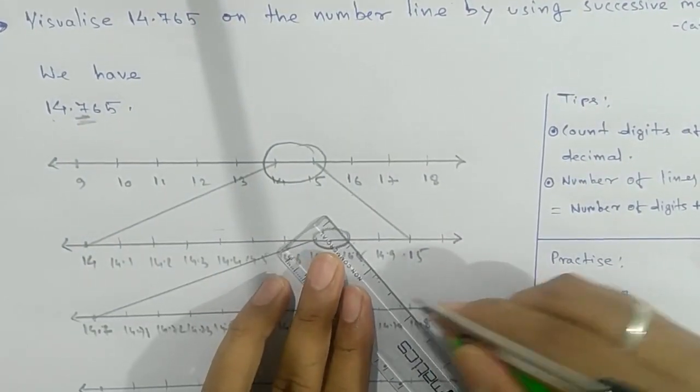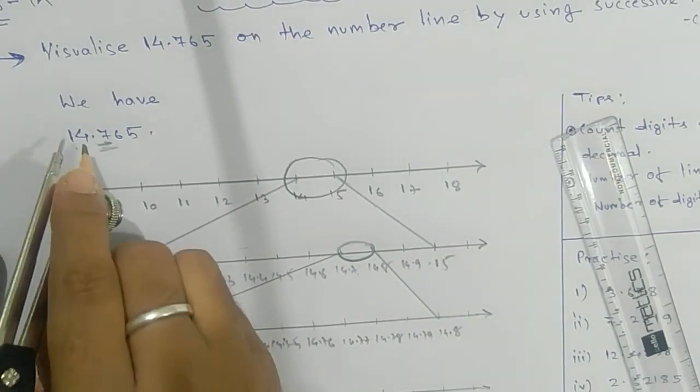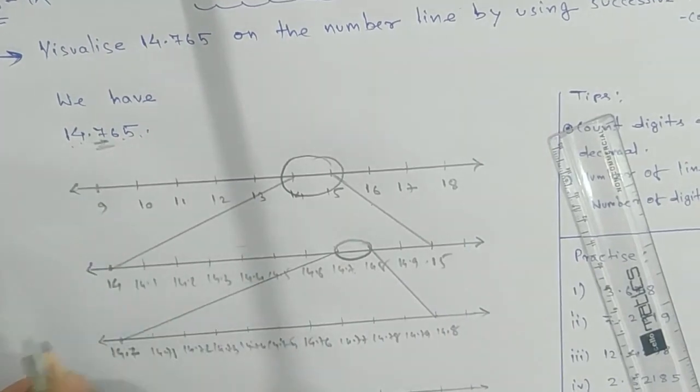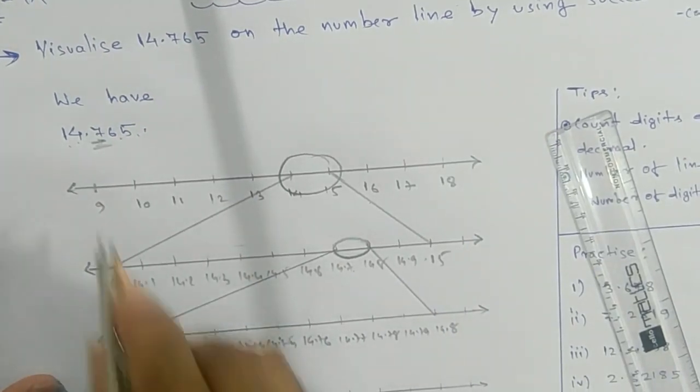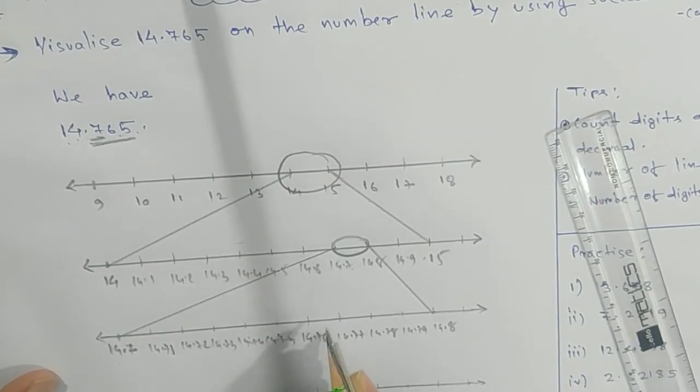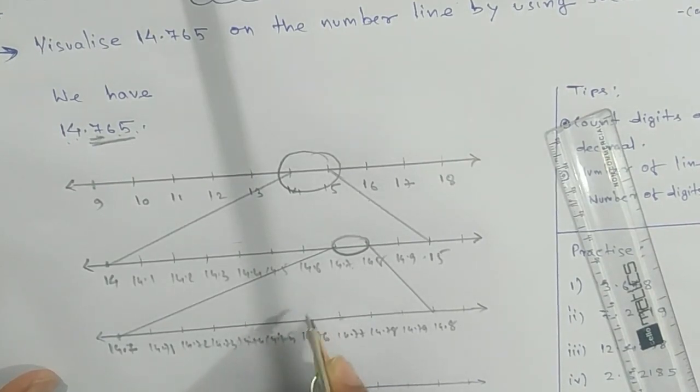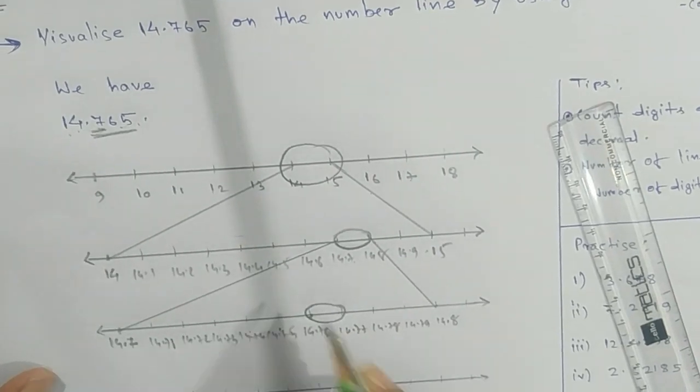Look at 14.765. Where is 76? Your number lies between 14.76 and 14.77. That means your number would be between these two digits, so we have to magnify this part.